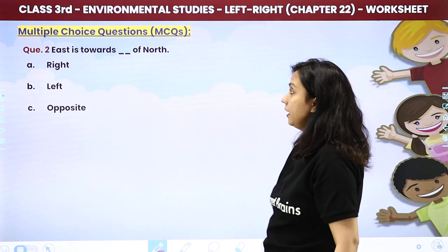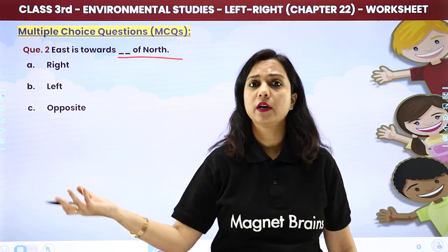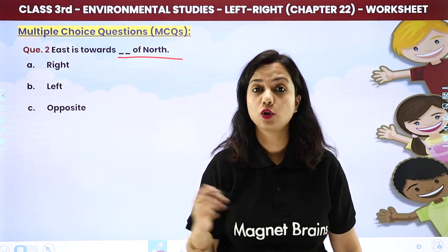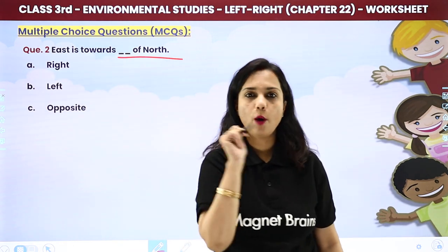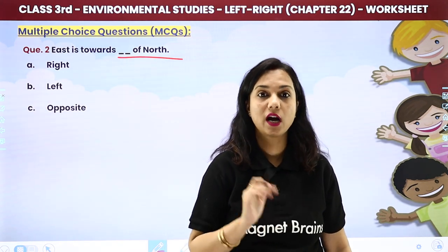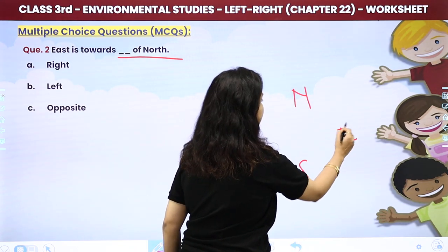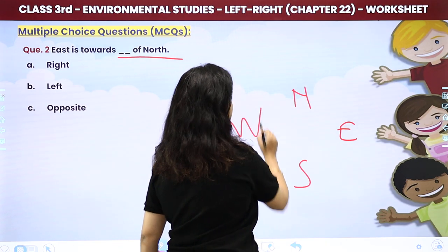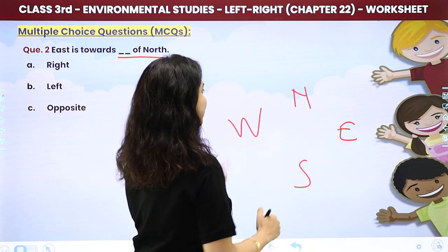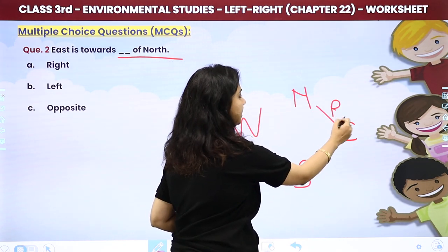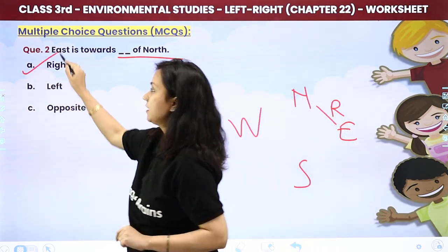East is towards the dash of north — is east to the right, left, or opposite of north? Think about it: north, south, east, west. East is to the right side of north. So the answer is right.